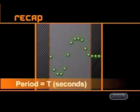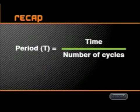The time taken for one cycle is called the period of the wave. The symbol for period is capital T and is measured in seconds. We can write an equation for period as T equals the time taken divided by the number of cycles.